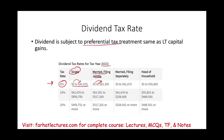Once your income exceeds $41,675 for a single individual, your tax rate is 15% on dividends. That 15% rate applies until you reach $459,750. For married filing jointly, it goes from $83,351 to $517,200. There are also different ranges for other filing statuses, such as married filing separately and head of household.